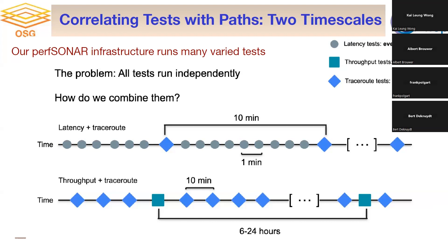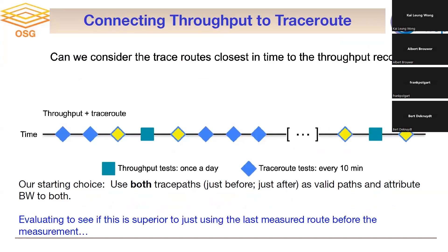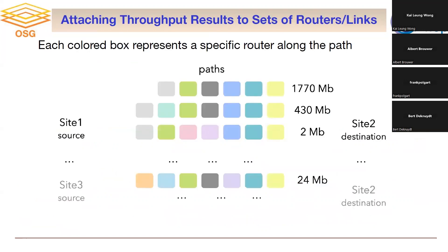I'll show you an example for throughput and traceroute. We measure throughput, and of course we have ongoing traceroute measurements. There's an ambiguity when traceroute measurements before and after a throughput measurement are different — which path do you attribute the throughput measurement to? We chose to split it, attributing to both, because that probably doesn't bias things too badly. The other option is just to take the last measurement you have. We're actually evaluating this.